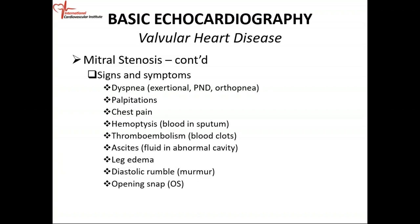The classic murmur for mitral stenosis is what we call a diastolic rumble. The mitral valve is located between the left atrium and left ventricle; in diastole it opens to allow blood to flow from left atrium to left ventricle. If the opening is restricted, you'll hear an abnormal sound in diastole. Normally you get laminar, streamlined flow, but if the valve is not opening fully you get turbulence — and what you hear with your stethoscope is the diastolic rumble.